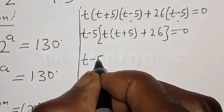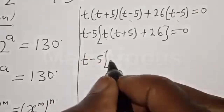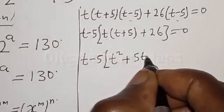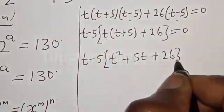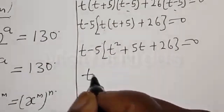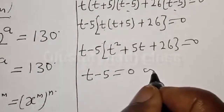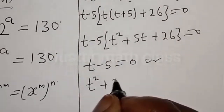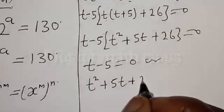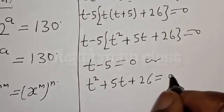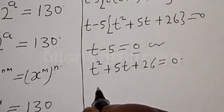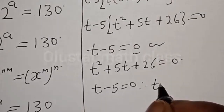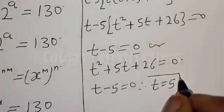We have t minus 5 equal to 0 or t squared plus 5t plus 26 is equal to 0. From t minus 5 equal to 0, therefore t is equal to 5. That is one of the values of t.